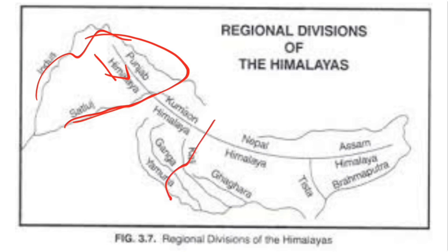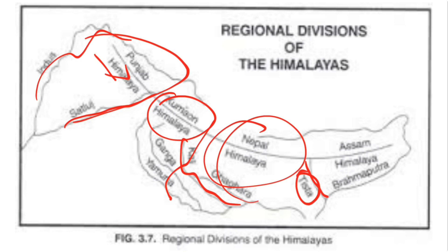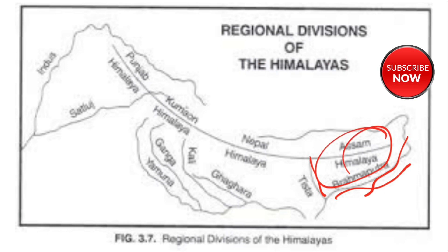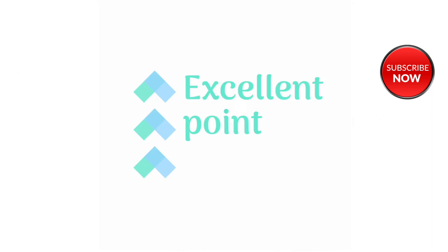The part of the Himalayas lying between the Sutlej and Kali rivers is known as the Kumaon Himalayas. The part lying between the Kali and Teesta rivers is known as the Nepal Himalayas. The part lying between the Teesta and Dihang rivers is known as the Assam Himalayas.